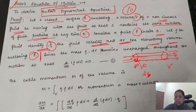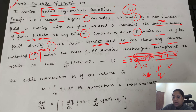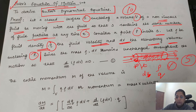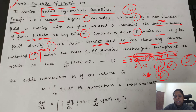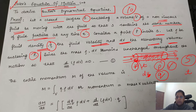जो fluid है उसकी density है ρ, उसकी velocity है q। Surface area जो cover हुआ है इस पूरे पैलो pipe का वो है S। इस पूरे pipe की volume है V, fluid की density है ρ, fluid की velocity है q, time को t से show करेंगे। अभी किसी point P के बारे में हम study करेंगे।